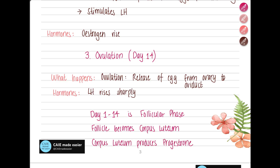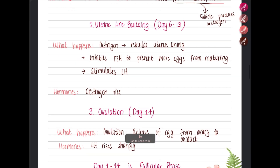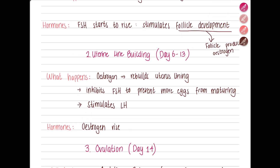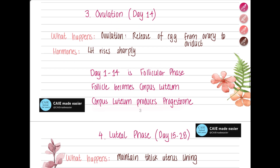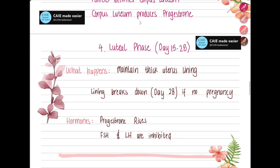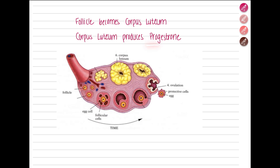If there is no pregnancy, the progesterone level will drop, the lining breaks down, and menstrual bleeding occurs — so we're back to day one and the cycle continues. The follicle that developed during the follicular phase transforms into the corpus luteum, which produces progesterone as the dominating hormone in the luteal phase. You can see this process in the diagram: the follicle was maturing, then ovulation occurred and the egg was released, and then the follicle became the corpus luteum, releasing progesterone.